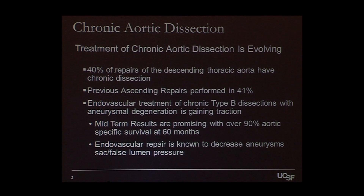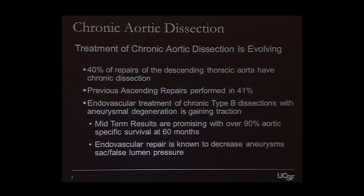For chronic aortic dissection, 40% of all repairs have an associated chronic dissection for aortic aneurysm, and a large predominance of patients with chronic aortic dissections have had an ascending aortic repair for previous reasons, oftentimes for dissection. Endovascular treatment has gained significant traction in this field, as survival and midterm results are very promising with over 90% aortic-specific survival in these patients. Endovascular aneurysm repair or dissection repair for chronic aortic dissections can decrease false lumen pressure.